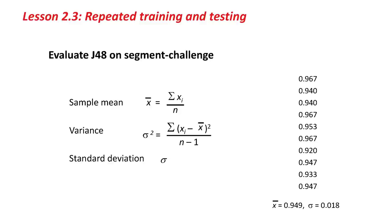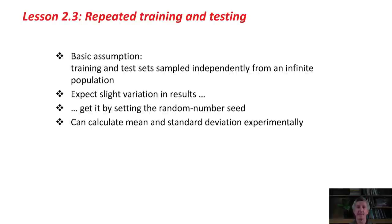The figures that WEKA puts out for you are misleading — you need to be careful how you interpret them, because the result is certainly not exactly 95.3333%; there's a lot of variation in all of these figures. Remember, the basic assumption is that the training and test sets are sampled independently from an infinite population. You should expect variation in results, perhaps more than just a slight variation. You can estimate the variation by setting the random number seed and repeating the experiment, then calculate the mean and standard deviation experimentally, which is what we just did.